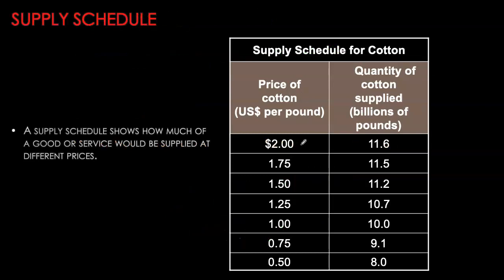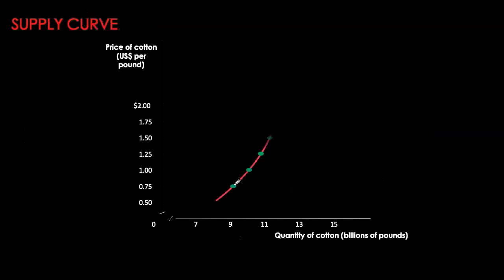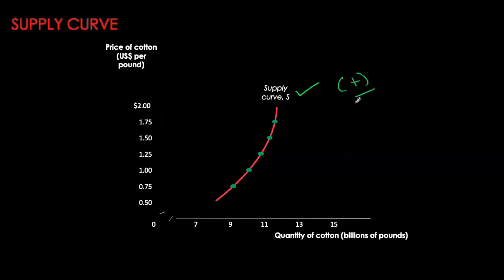Looking at our cotton example, I have prices starting from two dollars and falling all the way down to 50 cents. You can see that as price falls, quantity supplied decreases. We can take these coordinate points and plot them on a graph with quantity on the x-axis and price on the y-axis. Connecting these points gives us our supply curve, which is upward sloping, confirming that positive relationship between price and quantity supplied.